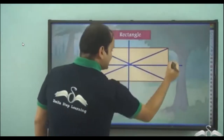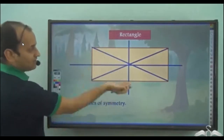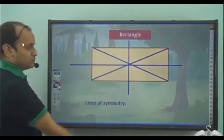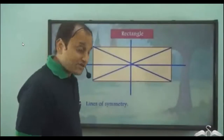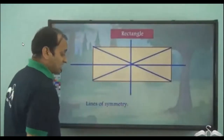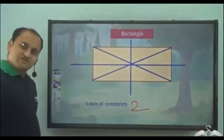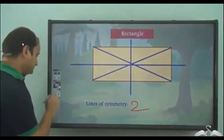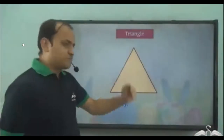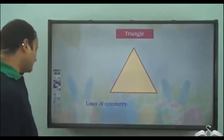This line is also not giving us two mirror halves. So we have only two lines of symmetry in the case of a rectangle. Now what about this particular triangle? Let's check.